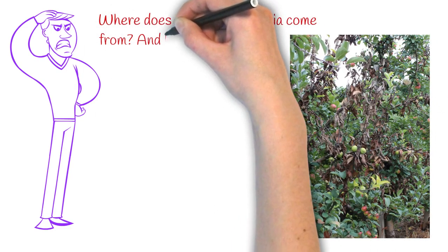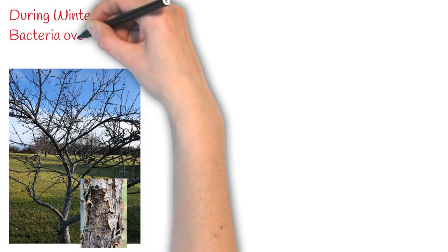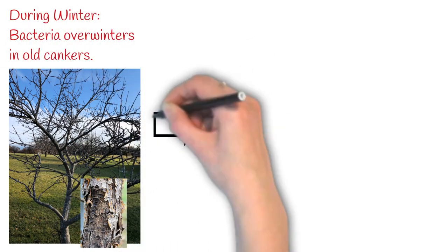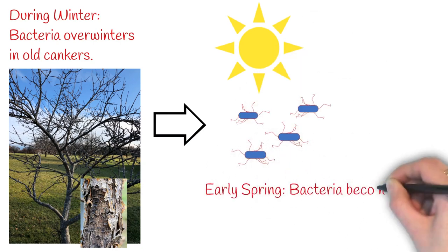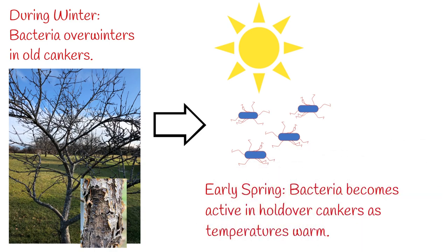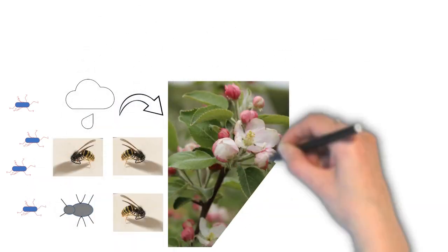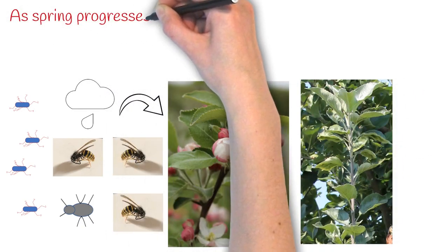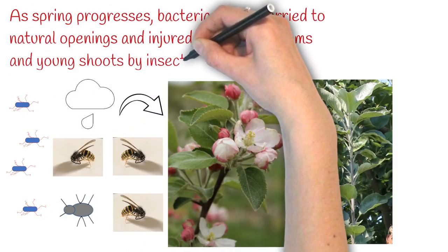Where does fire blight bacteria come from and how does it spread to kill my apple tree? During winter, bacteria overwinters in old cankers. Early spring, bacteria becomes active in holdover cankers as temperatures warm. As spring progresses, bacteria can be carried to natural openings and injured parts of blossoms and young shoots by insects and rain.